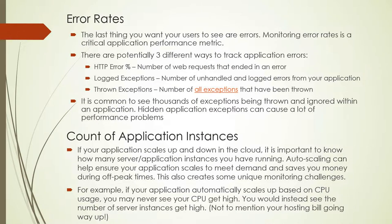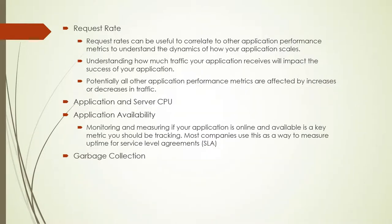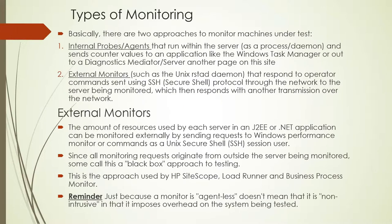There are two other metrics — error rates and count of application instances. We saw how error rates affect application performance and why we need to measure them. The count of application instances is important because most applications today are in cloud with auto-scaling enabled. Auto-scaling can affect your application performance and may hide a few application performance issues. There are also other metrics like request rate, server CPU, application availability, and garbage collection.